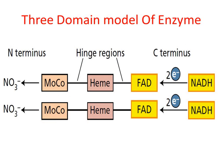Comparison of amino acid sequences for nitrate reductase from several species with those of other well-characterized proteins that bind FAD, heme, or molybdenum has led to a three-domain model for nitrate reductase. This figure illustrates the three binding domains — molybdenum complex, heme, and FAD — whose polypeptide sequences are similar across eukaryotes.